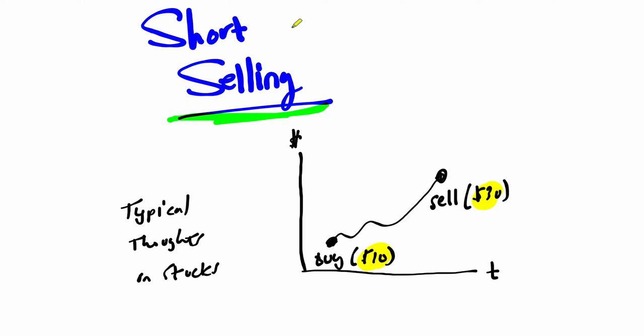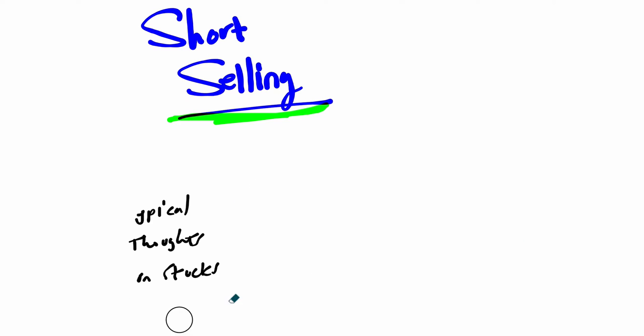So that's the typical perspective is that you want the value of your stock to go up but what if there was a way to make money when the stock goes down. And that, in fact, is what short selling is really all about. It's a way to make money when the value of stock goes down. Here's how it works.